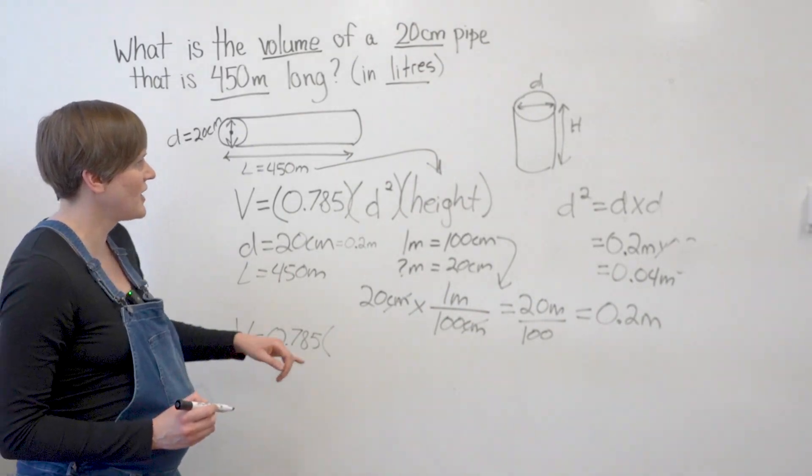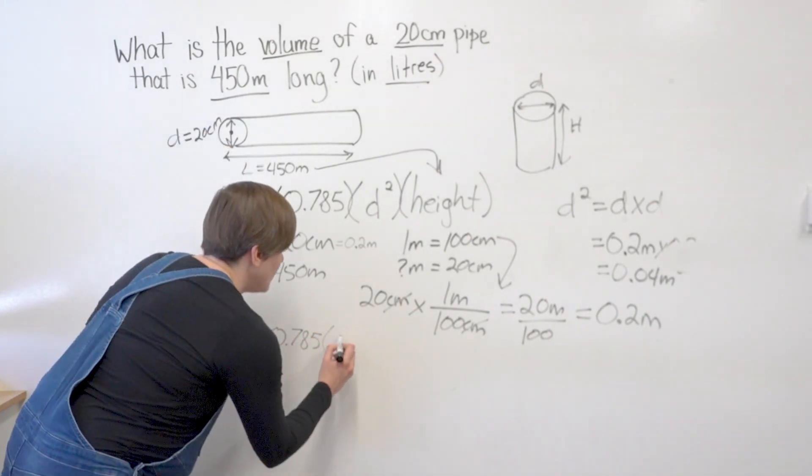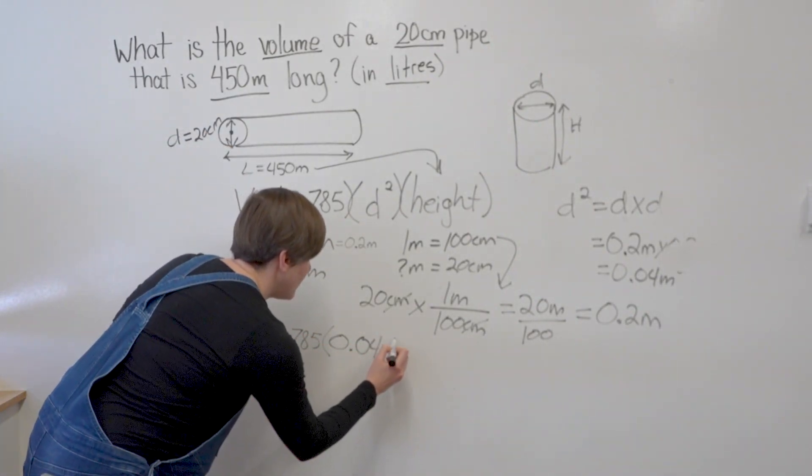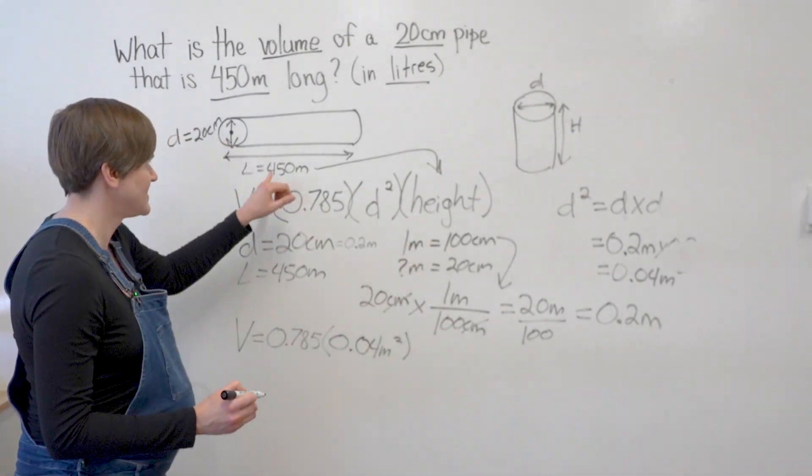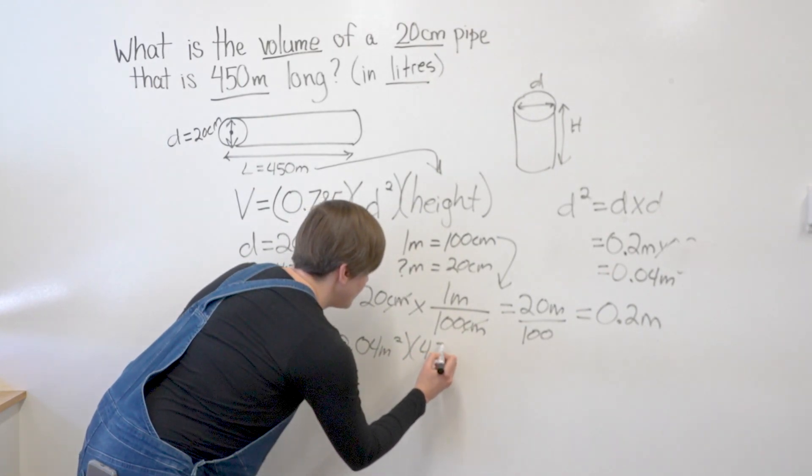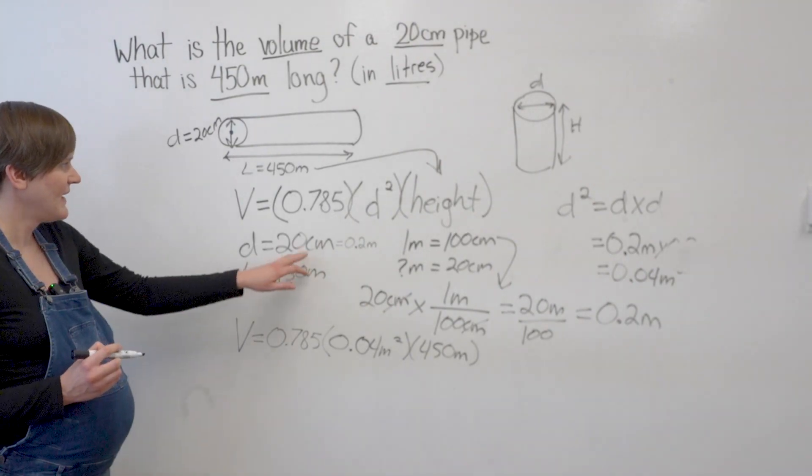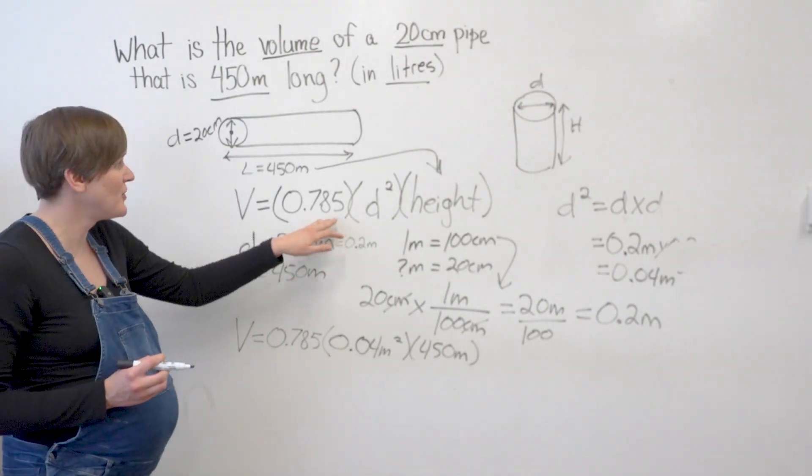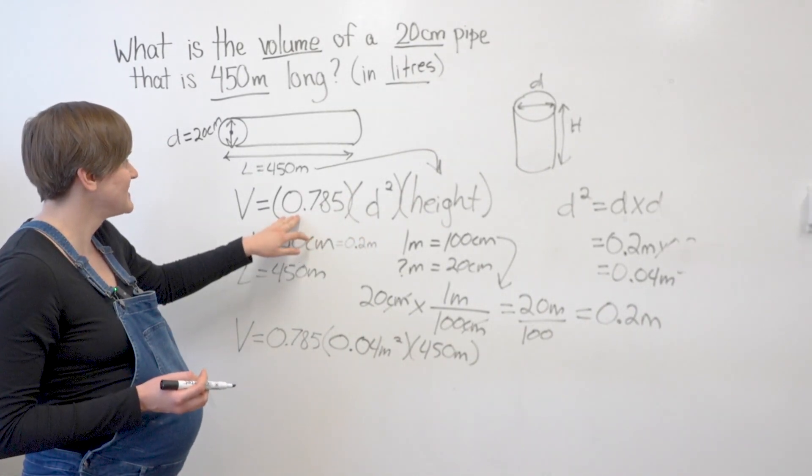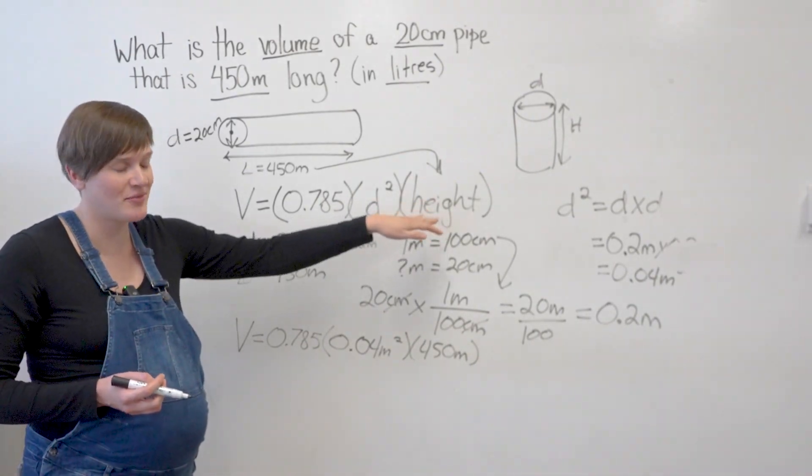Excellent. Now I can put that answer for D squared here in my formula. And times my height, which is actually my length in this case, 450 meters. Now the way they've written this formula here, they don't actually write out multiplication signs. So what this means is 0.785 times diameter squared times height. It's another way of writing that.